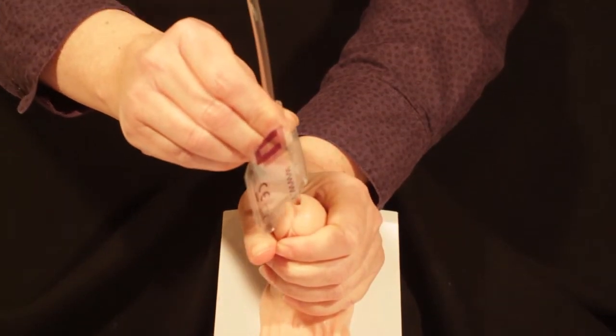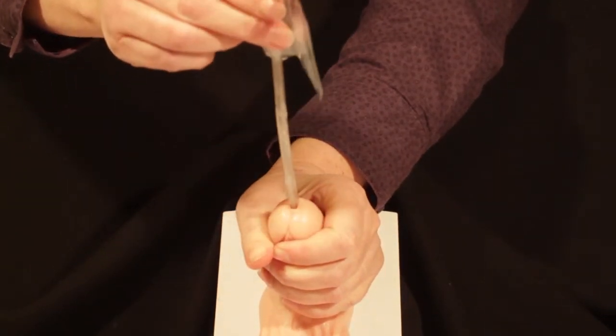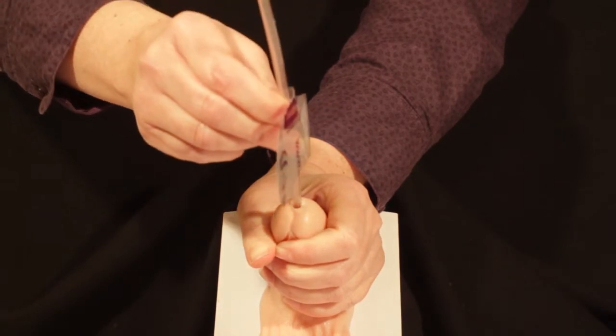Once urine starts to flow, insert the catheter a further one to two centimeters and allow the bladder to empty.